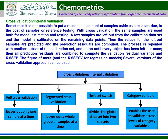Cross validation, or internal validation, is used when it is not possible to put a reasonable amount of samples aside as a test set due to the cost of samples or reference testing. There are four different types of cross validation: full cross validation, segmented cross validation, test set switch cross validation, and category variable cross validation.